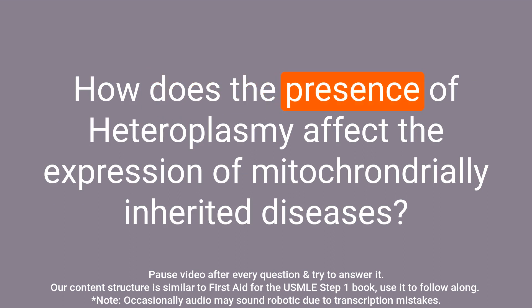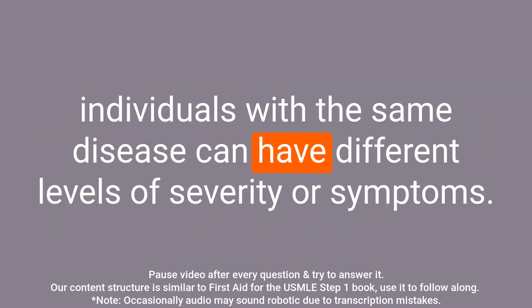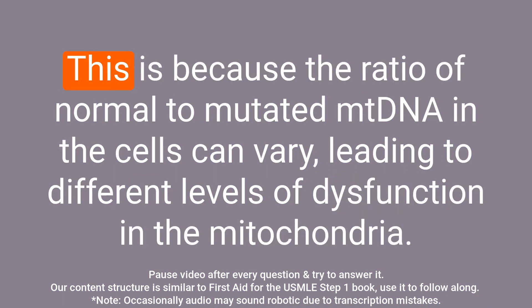Question: How does the presence of heteroplasmy affect the expression of mitochondrially inherited diseases? Answer: Heteroplasmy can lead to variable expression of mitochondrially inherited diseases, meaning different individuals with the same disease can have different levels of severity or symptoms. This is because the ratio of normal to mutated mtDNA in the cells can vary, leading to different levels of dysfunction in the mitochondria.